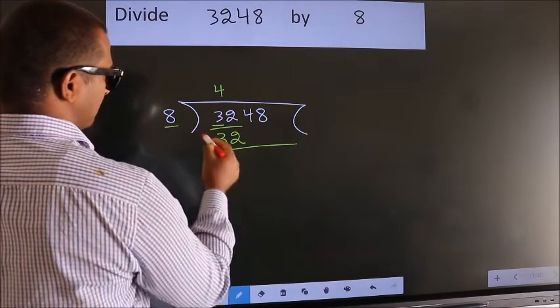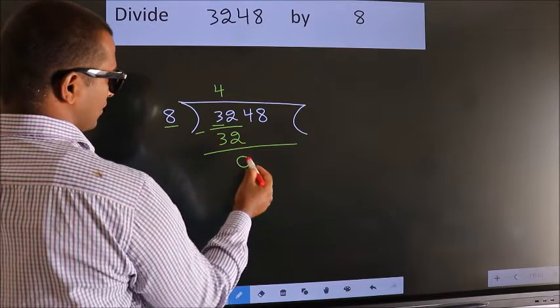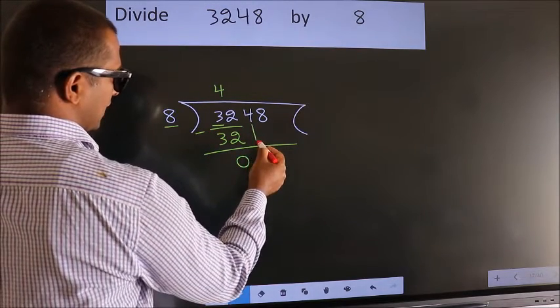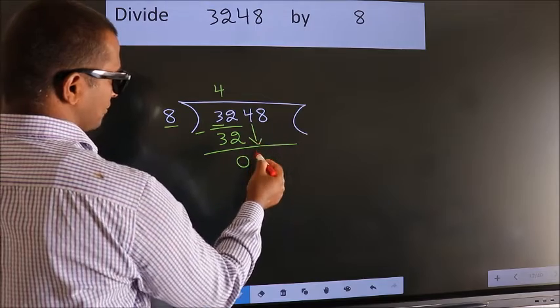Now, we should subtract. We get 0. After this, bring down the beside number. So, 4 down.